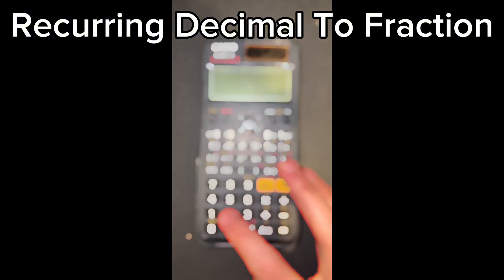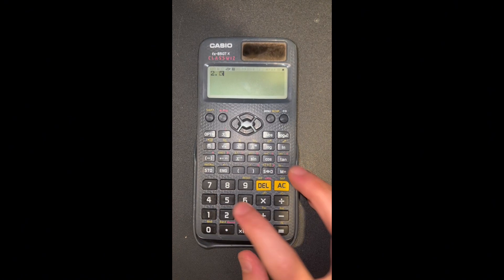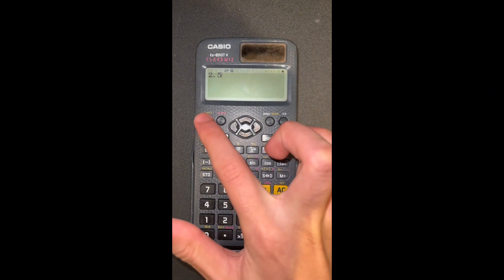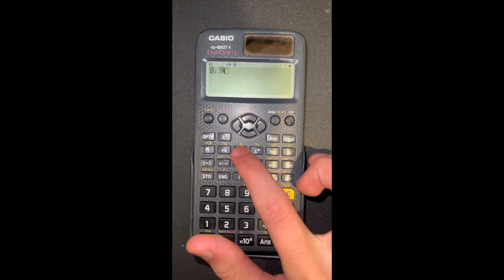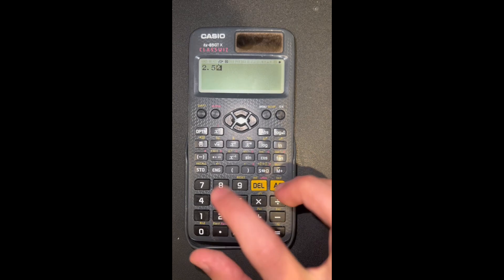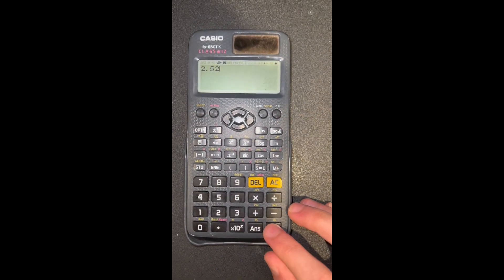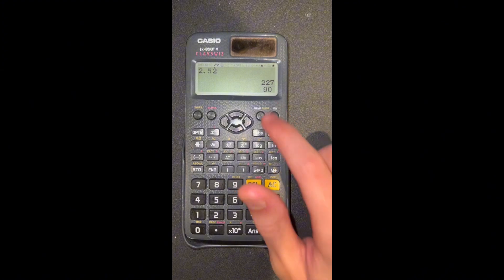Finally, I'll show you how you can convert recurring decimals to a fraction. So to write a recurring decimal, we press shift, and then look for the button, which is a square with a dot on top. Here we just write in our recurring decimal. So we have 2.52 recurring. Press equals, and it will just give it to you as a fraction.